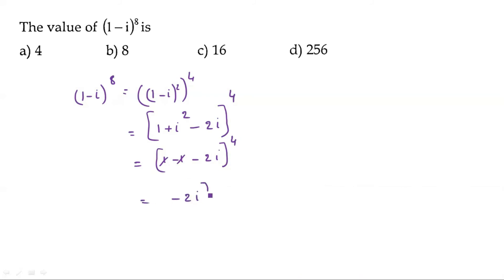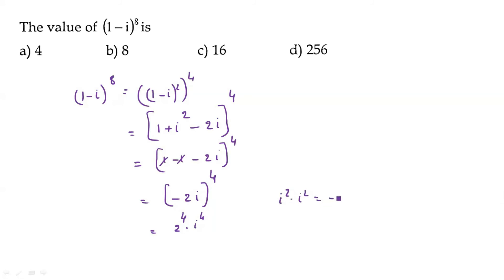So (-2i)^4. The negative sign to the power 4 becomes positive, giving 2^4 × i^4. Now i^4 = i²×i² = (-1)×(-1) = 1. So the result is 2^4 × 1 = 16. Option C is the correct answer.